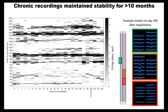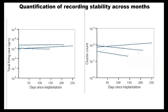This gave us stable recordings for more than 10 months. On the x-axis is days since implantation, on the y-axis is depth of the probe, and the color code shows firing rates. The black stripes across different days show that if some part of the probe was active in the beginning, it kept being active for more than 10 months — so we didn't lose very much. On the right you can see example clusters from day 198 after implantation, and they still look okay. Here you can see three mice that we implanted this way, showing total firing rates — which are quite stable — and cluster counts on the right.